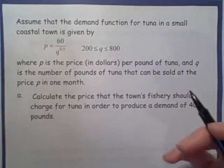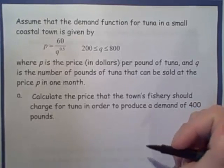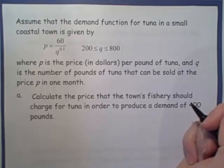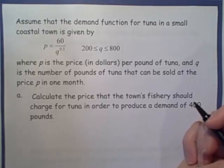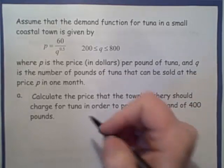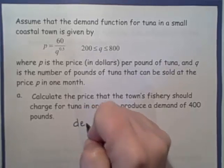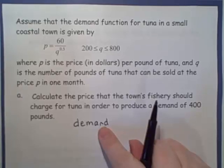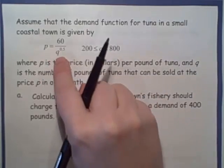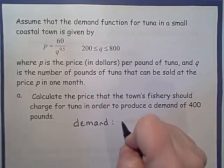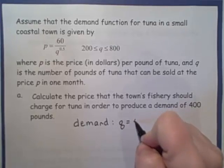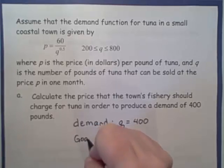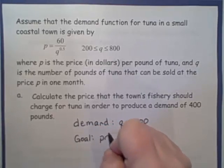Okay, so part A. Calculate the price that the town's fishery could charge for the tuna in order to produce a demand of 400 pounds. Okay, so the demand is supposed to be 400 pounds, and remember that for pounds of tuna, that goes with variable Q. So that tells us Q equals 400, and our goal here is to figure out the price. We want to know what is the value of P.